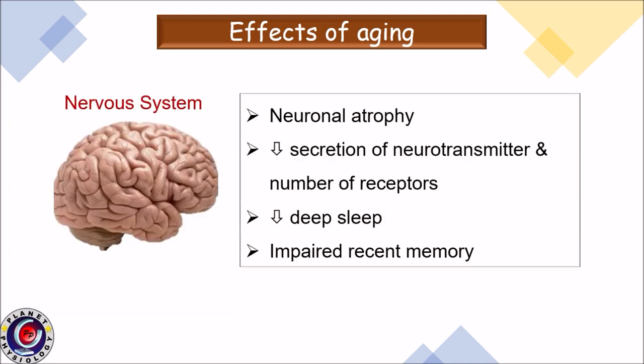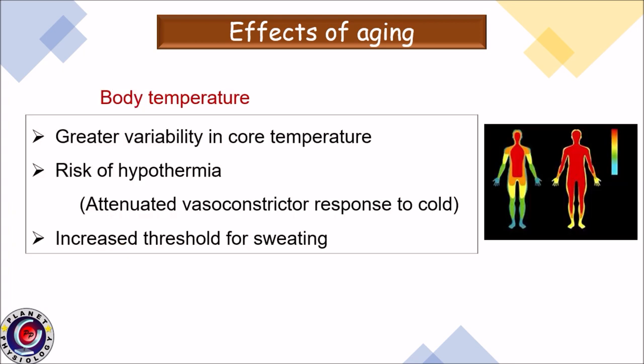The nervous system shows varied changes. Similar to muscles, there is neuronal atrophy, which can manifest in various signs and symptoms. There is decreased secretion of neurotransmitters and a reduced number of neurotransmitter receptors, reduction in deep sleep, and impairment in recent memory. Body temperature shows greater variability in cold environments, with an increased risk of hypothermia in the elderly, mainly due to an attenuated vasoconstrictor response to cold, and there is also an increased threshold for sweating.